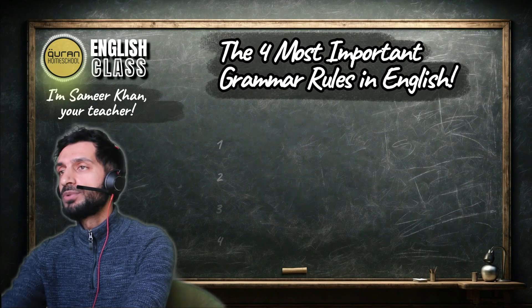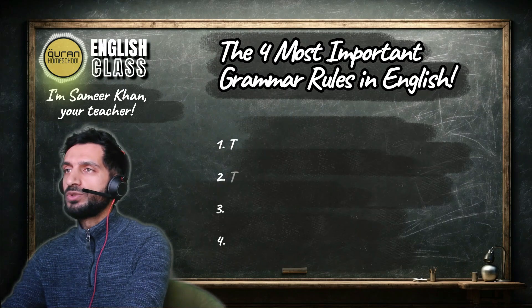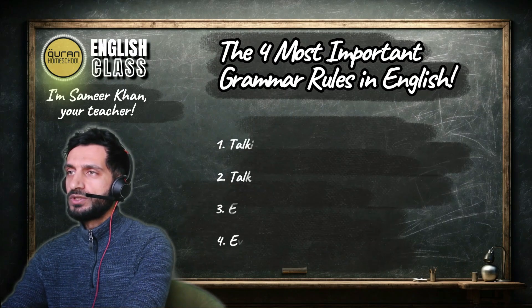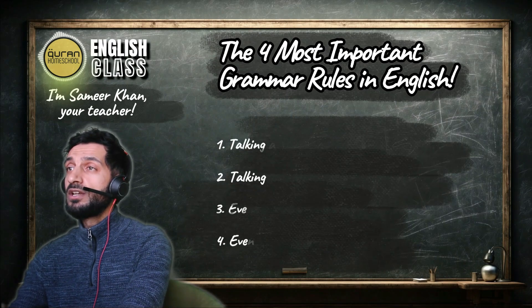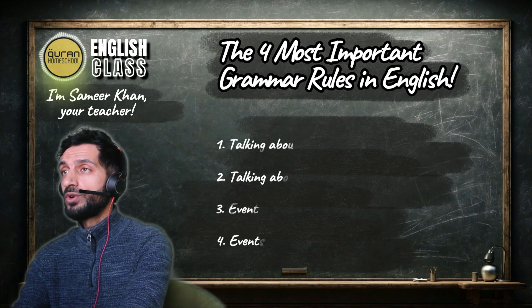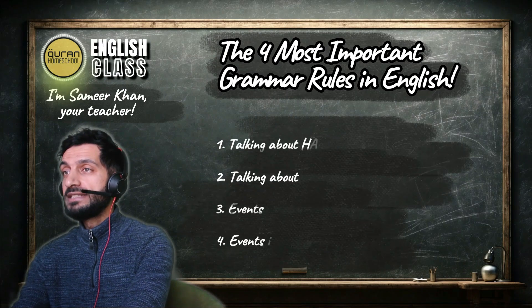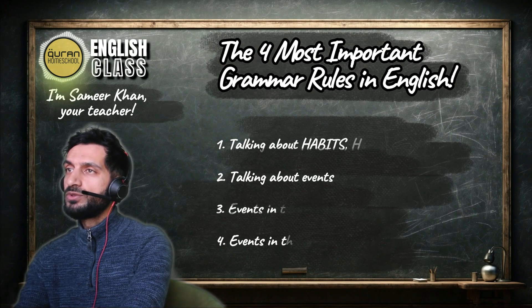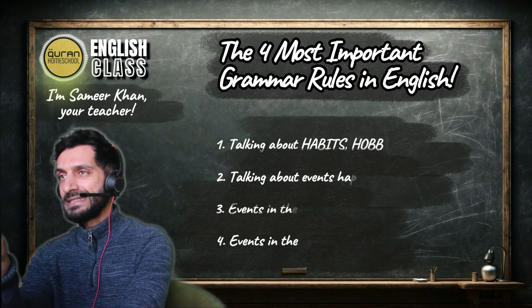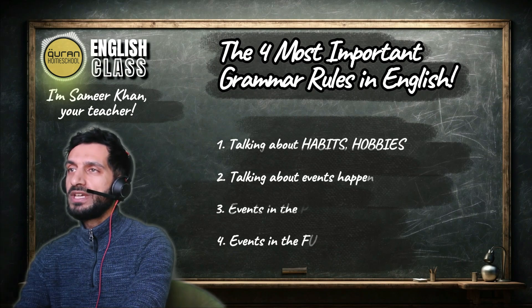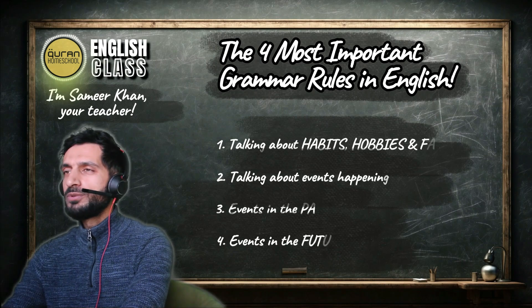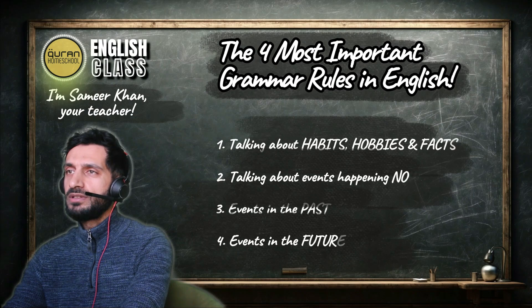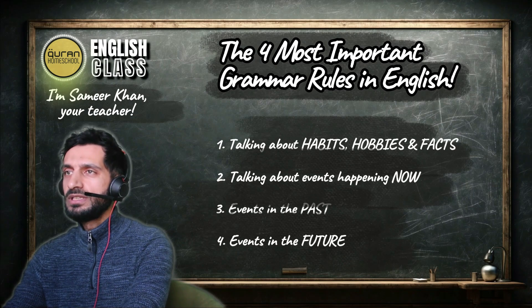These four things are the most important things you need to know in English. If you can learn these four verb tenses, if you can learn how to make sentences in these four ways, you will be able to talk about anything, inshallah.